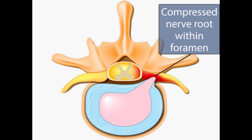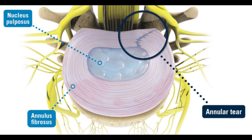The radicular pain is usually due to direct pressure from the extruded disc fragment coming out from the annular tear, or leaking fluid from the complete annular tear. The back pain is usually due to the nuclear fragment extruding out and preventing healing of the annulus.